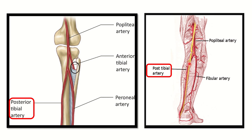This is the tibial nerve, so the tibial nerve is also related to the posterior tibial artery. We need to find the structure that lies in the posterior compartment of the leg, because the posterior tibial artery lies in the posterior compartment.